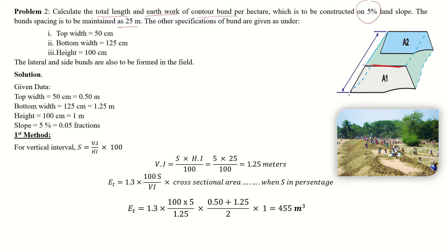The height of the bund is 100 centimeters, that is 1 meter. The cross-section of the bund is a combination of two triangles and one rectangular shape — one triangle on each side and a rectangle in the middle. Given data: top width is 50 centimeters and bottom width is 125 centimeters.